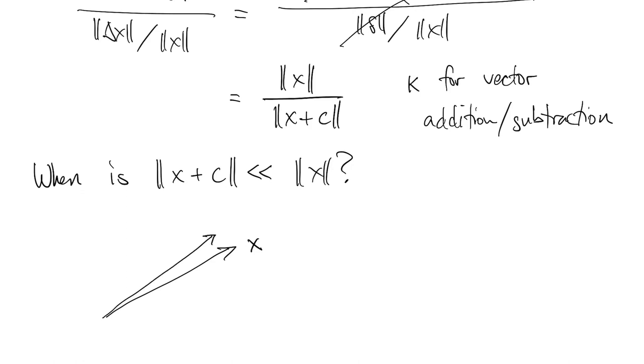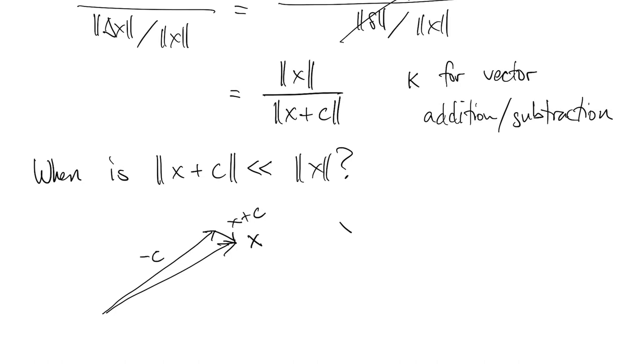So if this is the vector x, and c is nearly the same vector, or negative c, then when you add them together, you get this small vector. So when x and c are nearly parallel, that's when they can cause cancellation error.